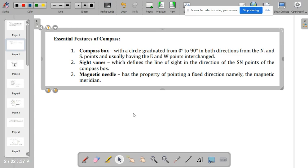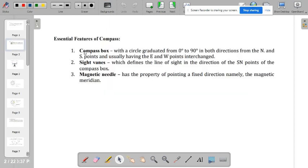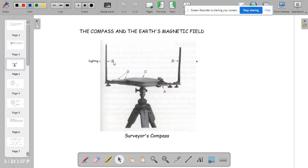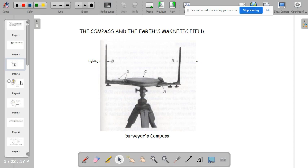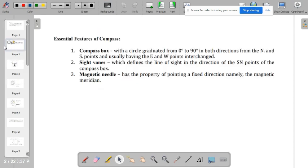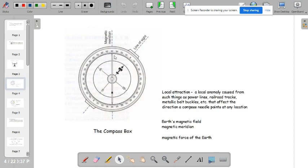So the compass box is this one, letter C. And then we have the side veins. This is the side veins, D. And then of course we have the magnetic needle, which is this one. This one, I mean this one.